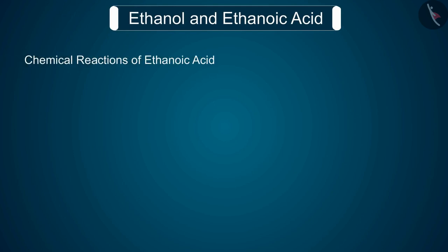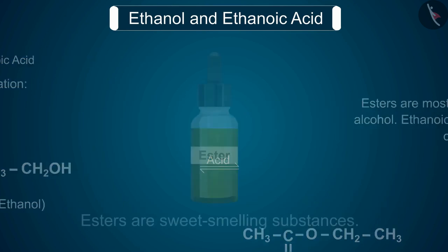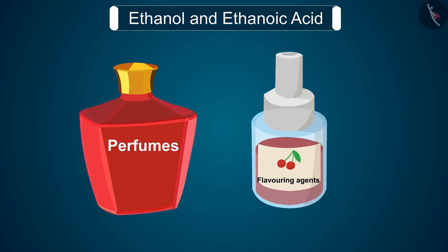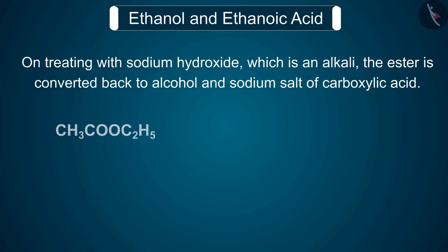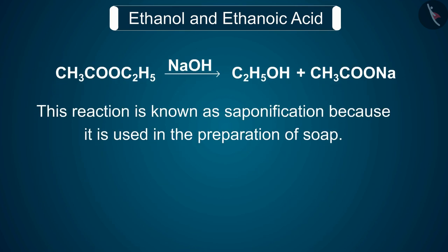Now we will discuss the chemical reactions of ethanoic acid. Reaction 1: esterification. Esters are most commonly formed by reaction of an acid and an alcohol. Ethanoic acid reacts with absolute ethanol in the presence of an acid catalyst to give an ester. Generally, esters are sweet-smelling substances and are used in making perfumes and as flavoring agents. On treating with sodium hydroxide, which is an alkali, the ester is converted back to alcohol and sodium salt of carboxylic acid. This reaction is known as saponification.